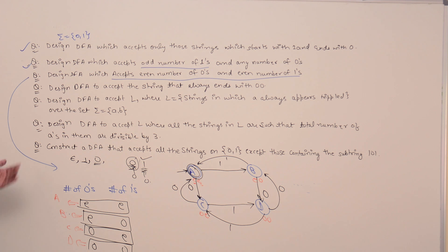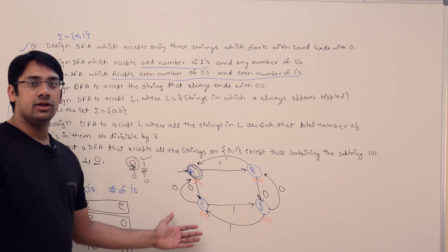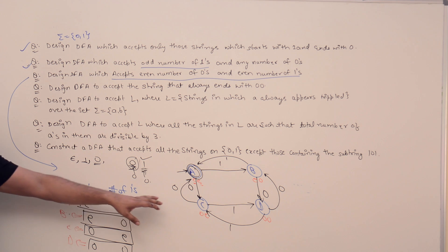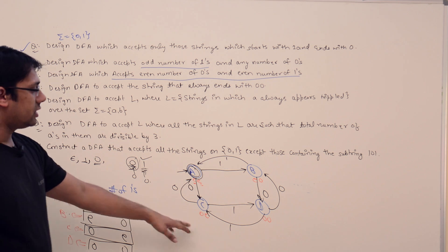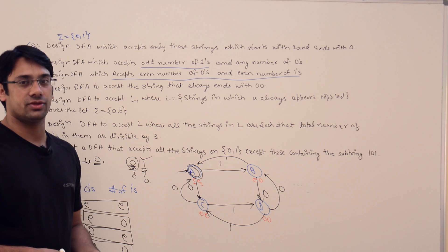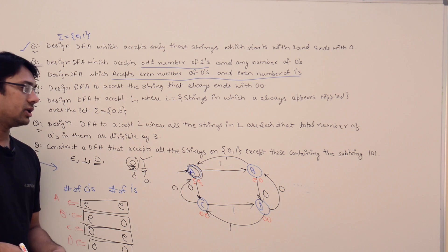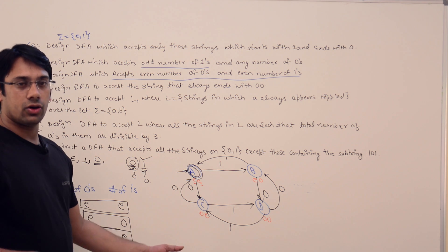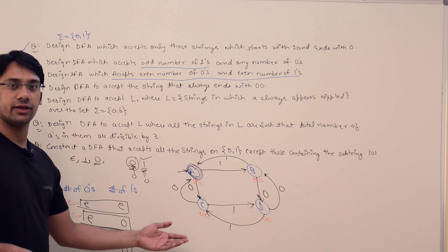There are different methods to solve the same question. Let me clear this and show you one more method — a more mathematical way of doing it. Drawing DFAs is based on your aptitude, and if you are good with aptitude you can easily do these questions. Let me draw the second way of solving the same question.